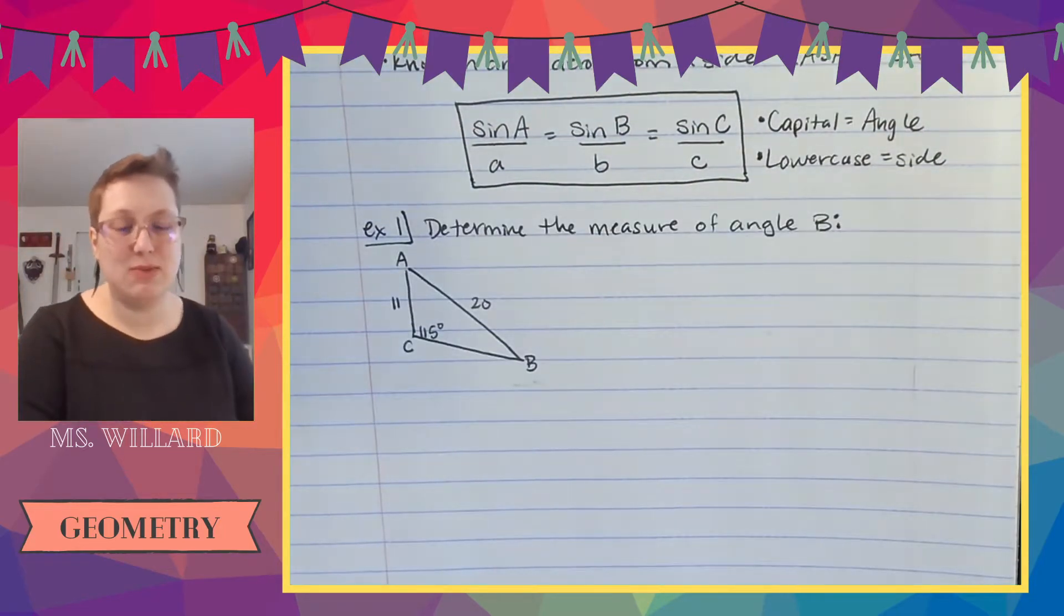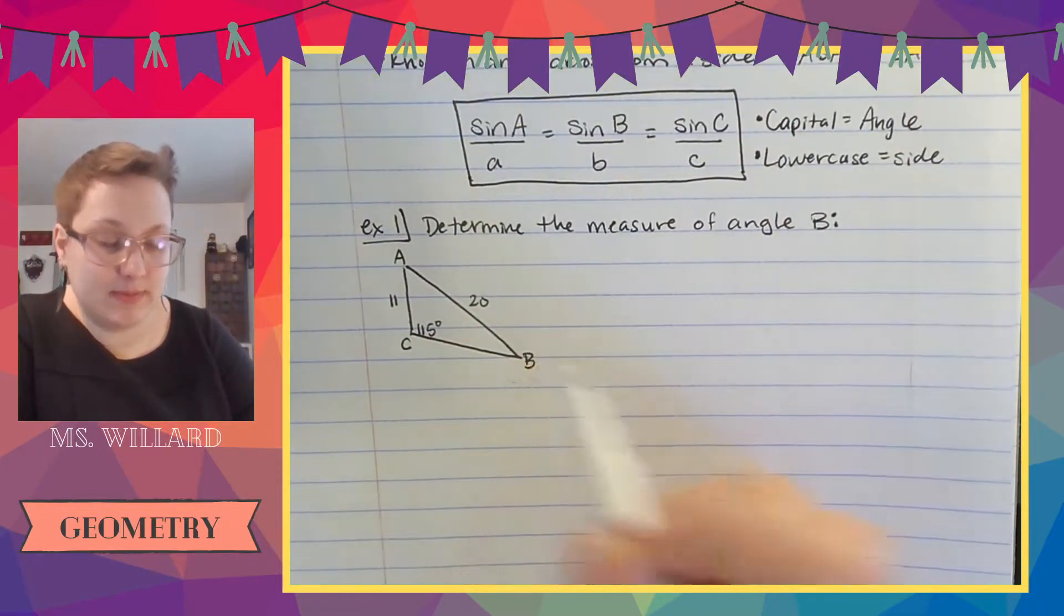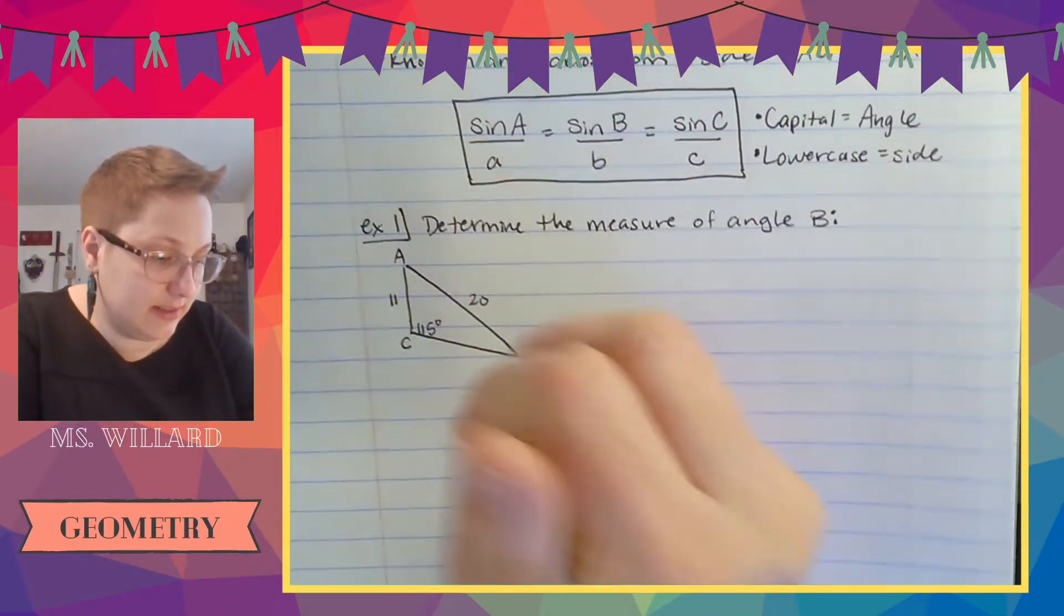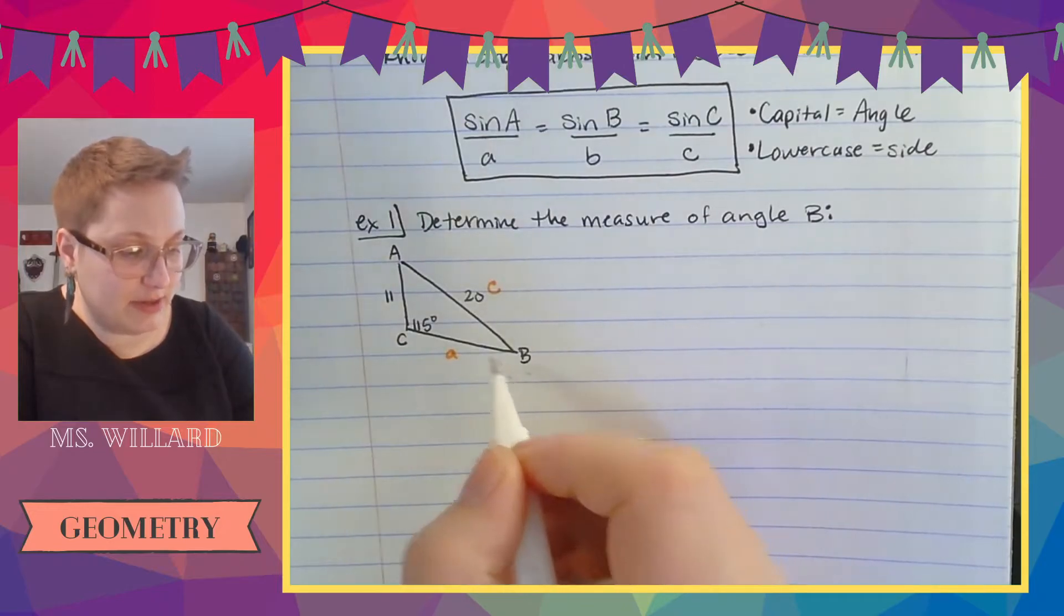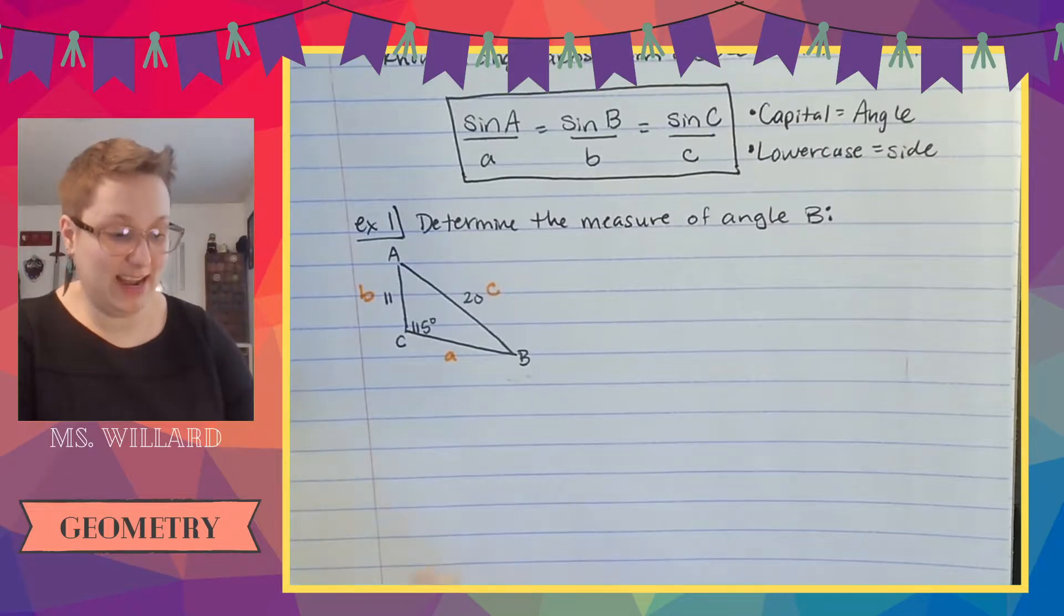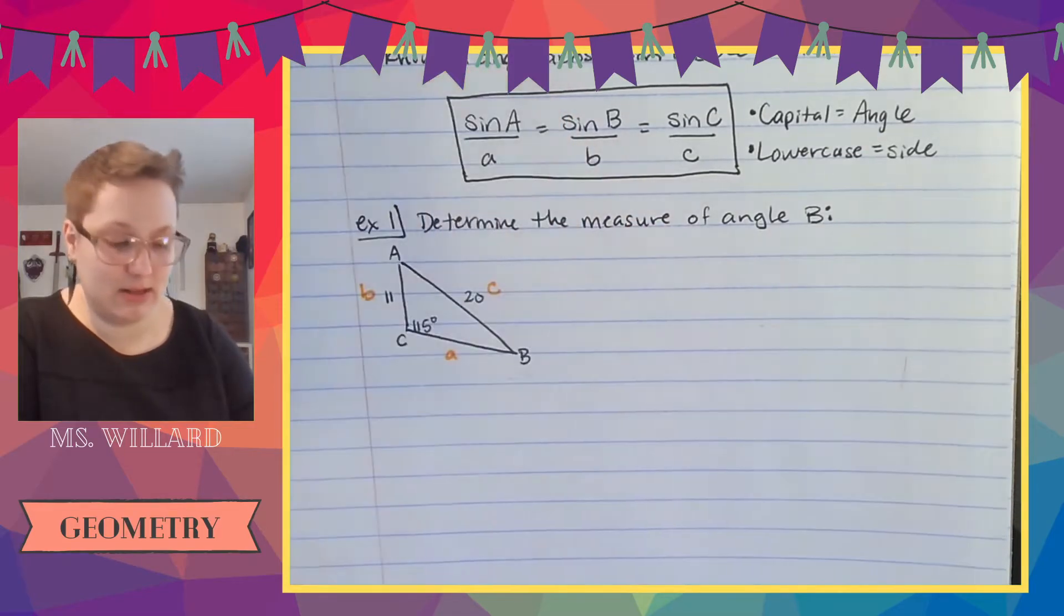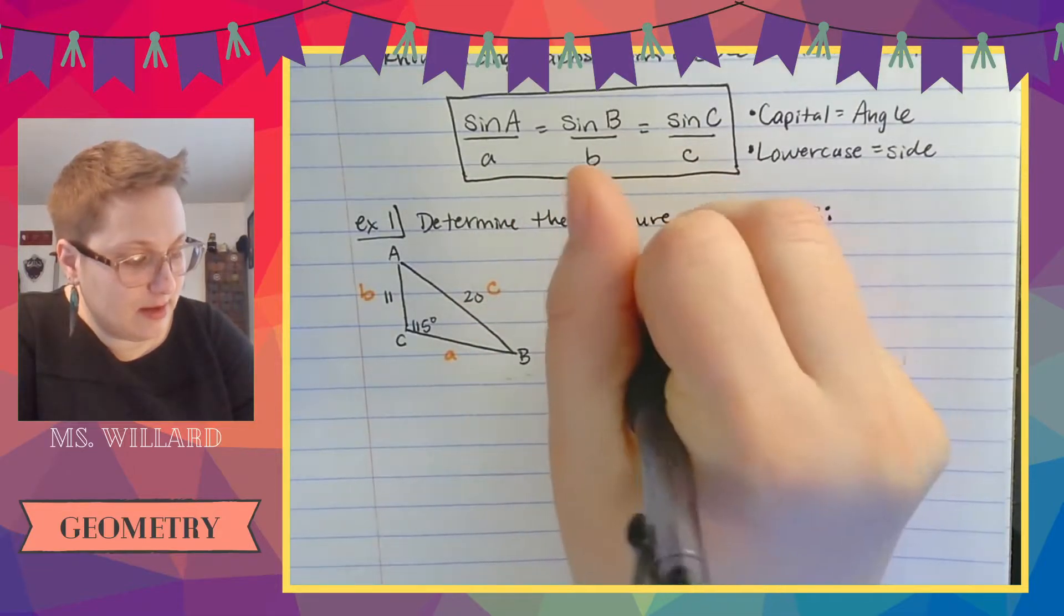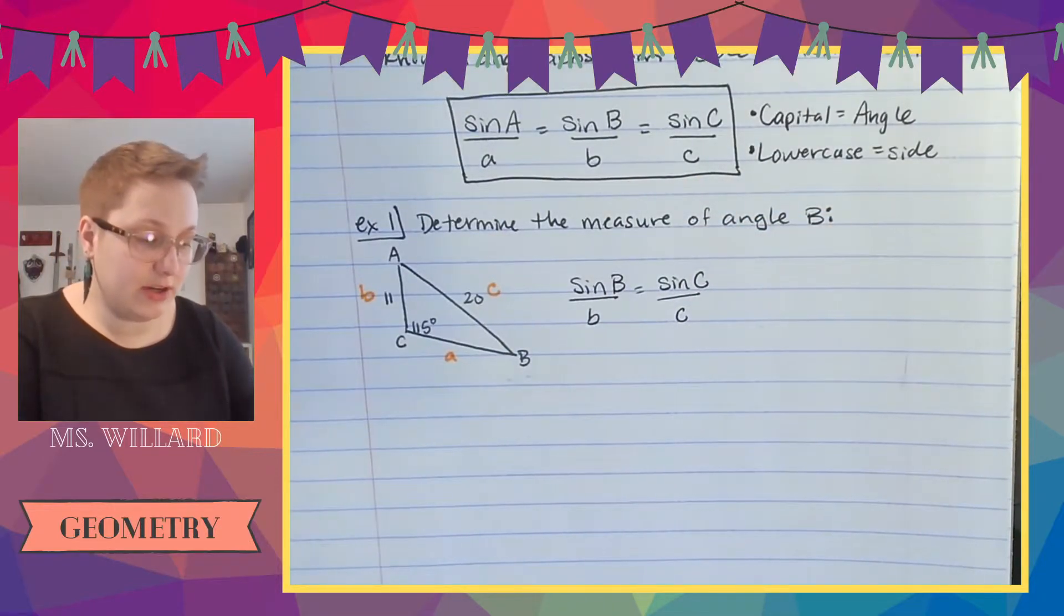So here's my triangle. I really want to find the measure of angle b. This is what I'm looking for. This is my unknown and I currently have that this is angle a so across from angle a is a side a. Across from angle c is side c and across from angle b is side b. So I know that those things are true. So I don't know a and I don't care about a so I'm going to ignore that a exists in my law of sines.